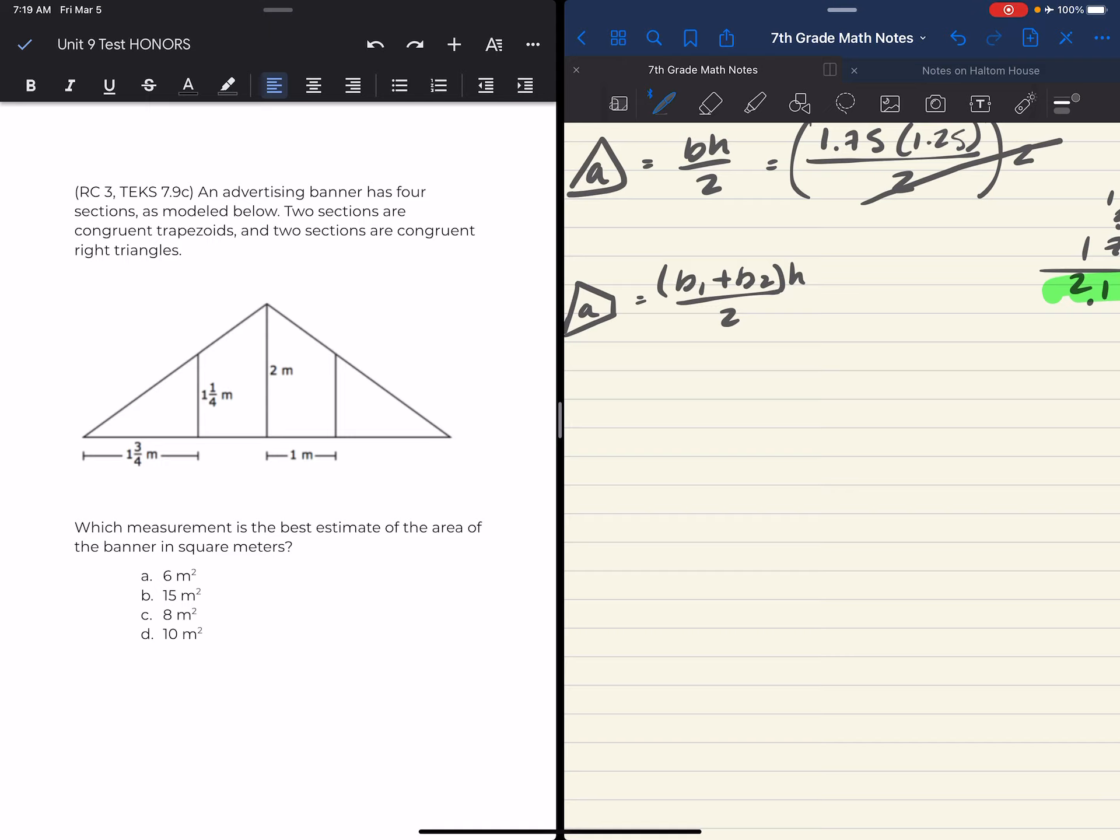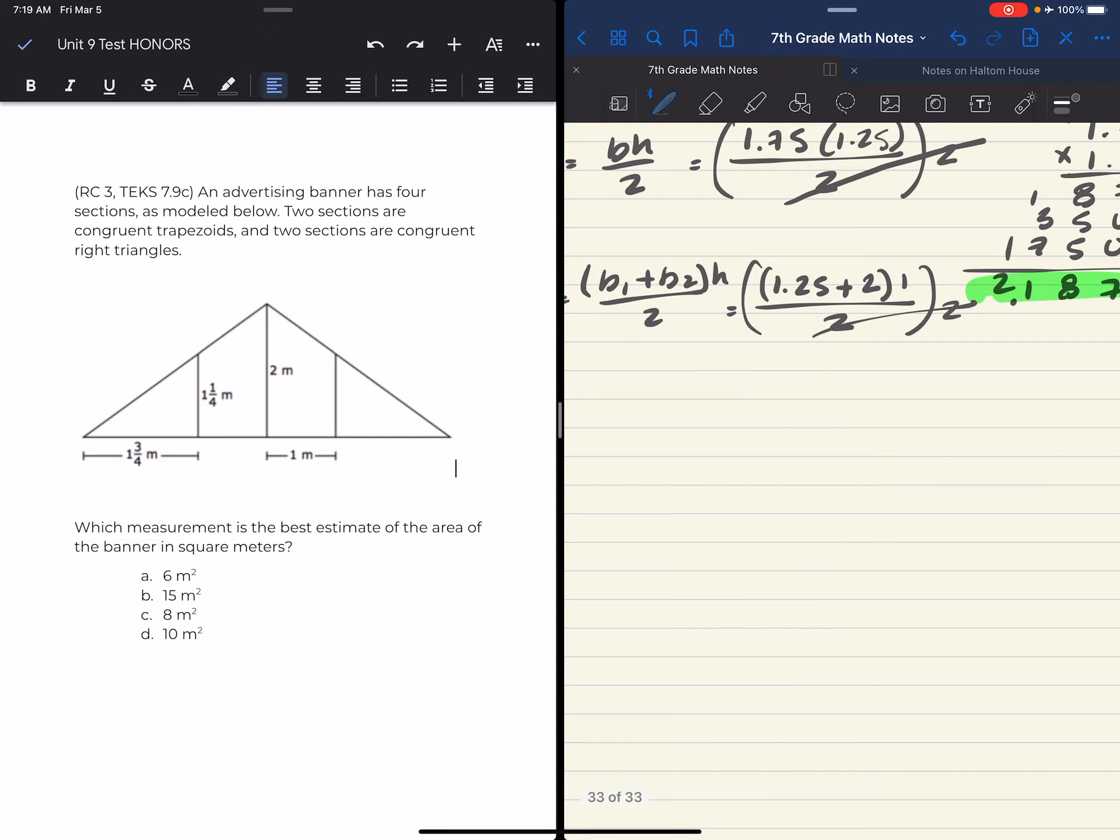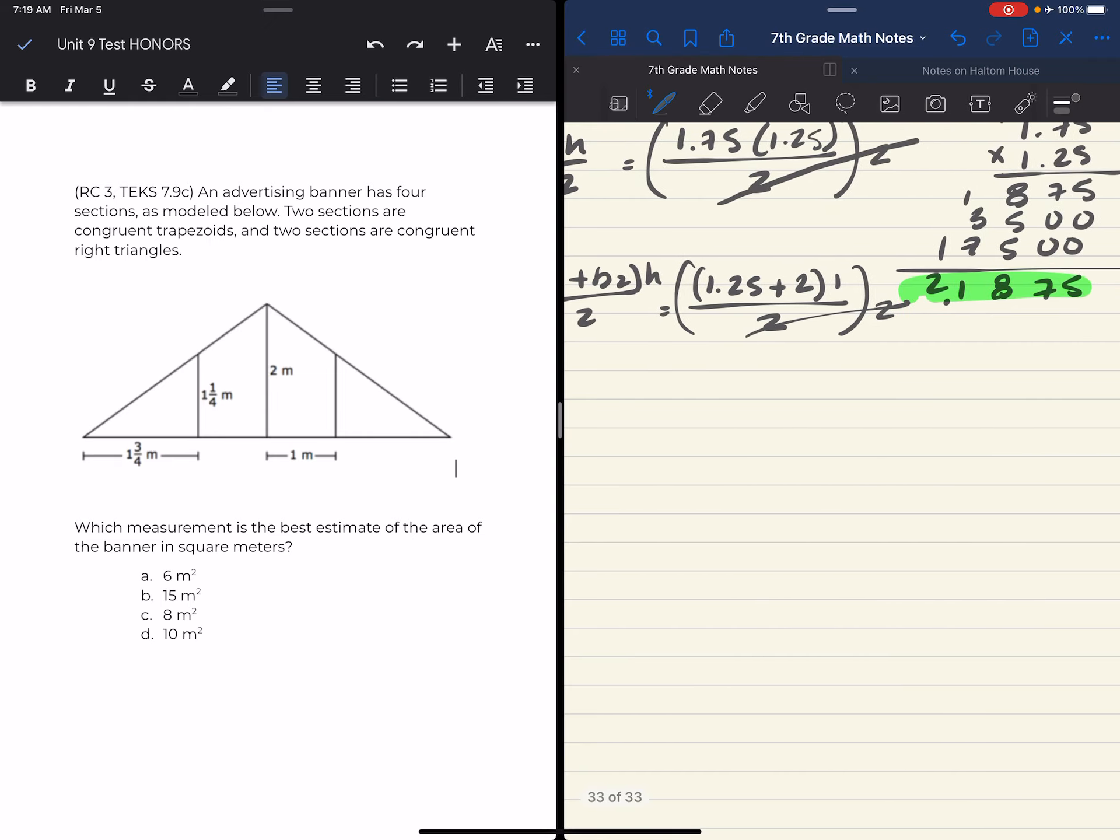So I am going to - base one is one and one-fourth, so that's 1.25 plus base two, which is two, times the height, which is one, then divided by two. But keep in mind, we're going to then multiply by two and those cancel each other out. So let's add 1.25 plus two is 3.25.